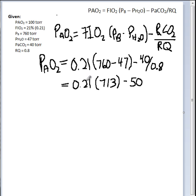So now I've done the first step of the math here, where I took the 760 minus 47 and came up with 713, which will be multiplied by 0.21. And then I took the 40 and divided by the 0.8, which gives me 50. If you use your calculator and carry these out, you should come up with the same results.